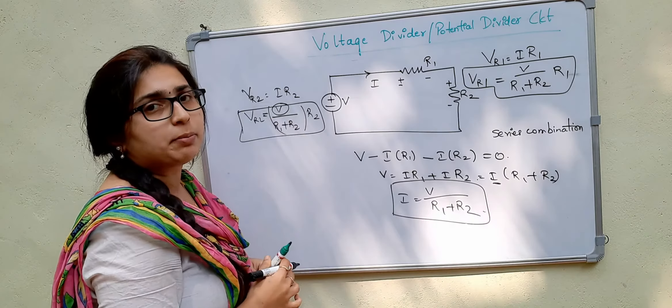So, across R2, if I have to measure the voltage drop, that is V R2, it equals R2 divided by R1 plus R2. Since this is a series combination, we can consider R equivalent as R1 plus R2. So R1 plus R2 is nothing but R equivalent. This is the voltage divider circuit.